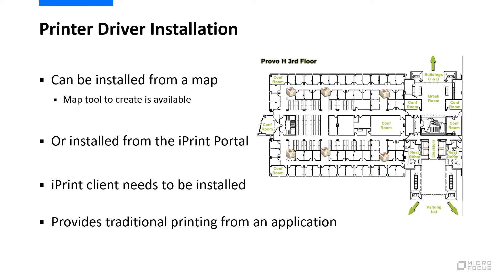There are a number of ways that the user can install a printer driver. Something we use in-house is installing it through a map — a map of the world where you can click on a country, a town, go into the floor plan, and just click on a printer to install that particular printer driver. The other way is through the iPrint portal, a web-based portal that lists each printer and lets you select the printer to install. If you're using self-service printer driver installation, you do need to install the iPrint client, which gives you what I call traditional printing from an application — for example, the file print option in Word.